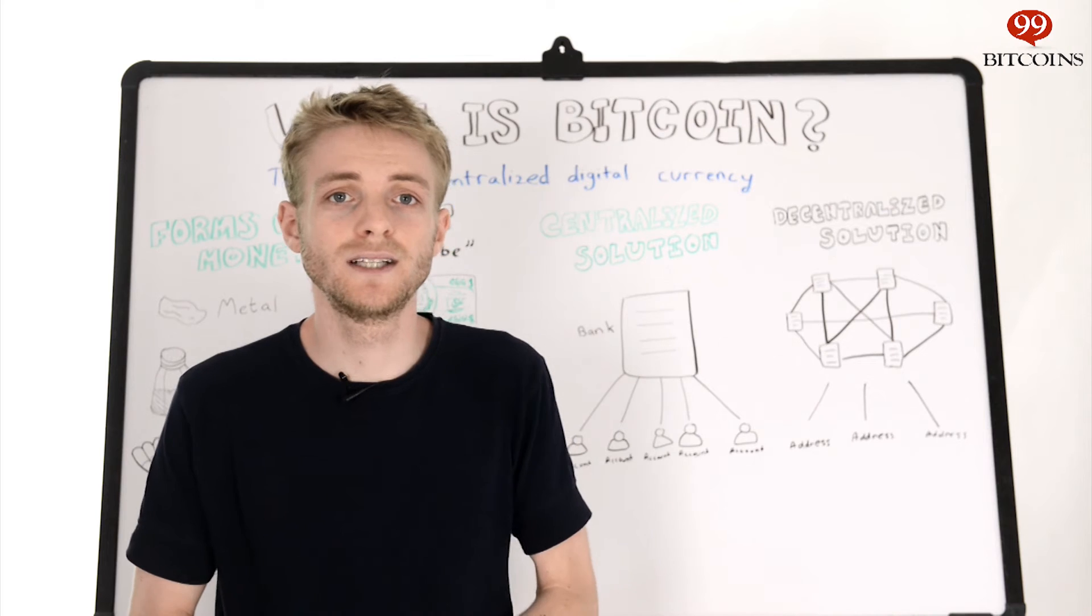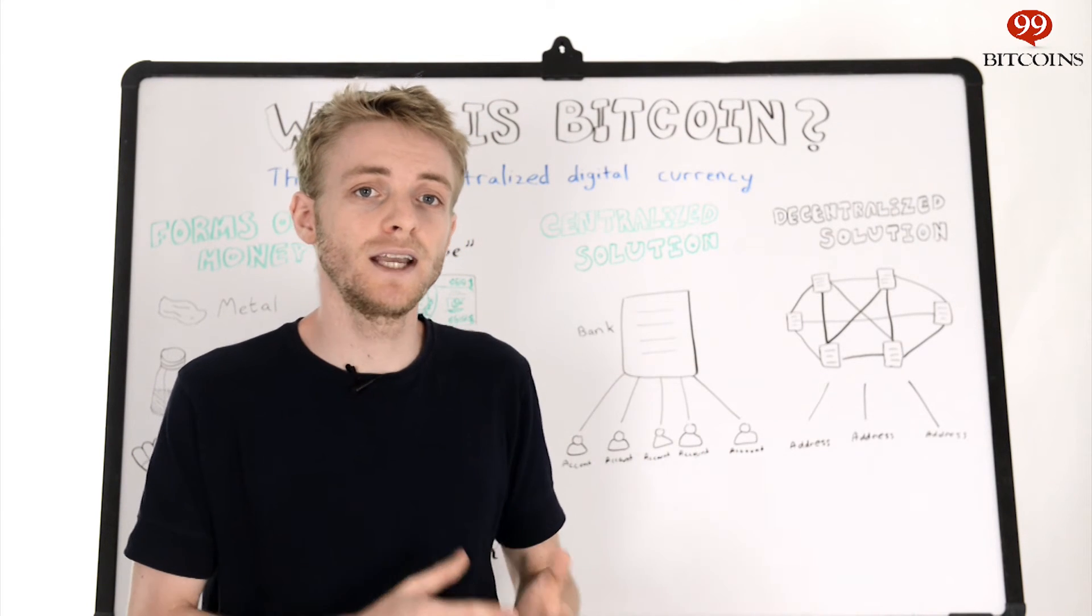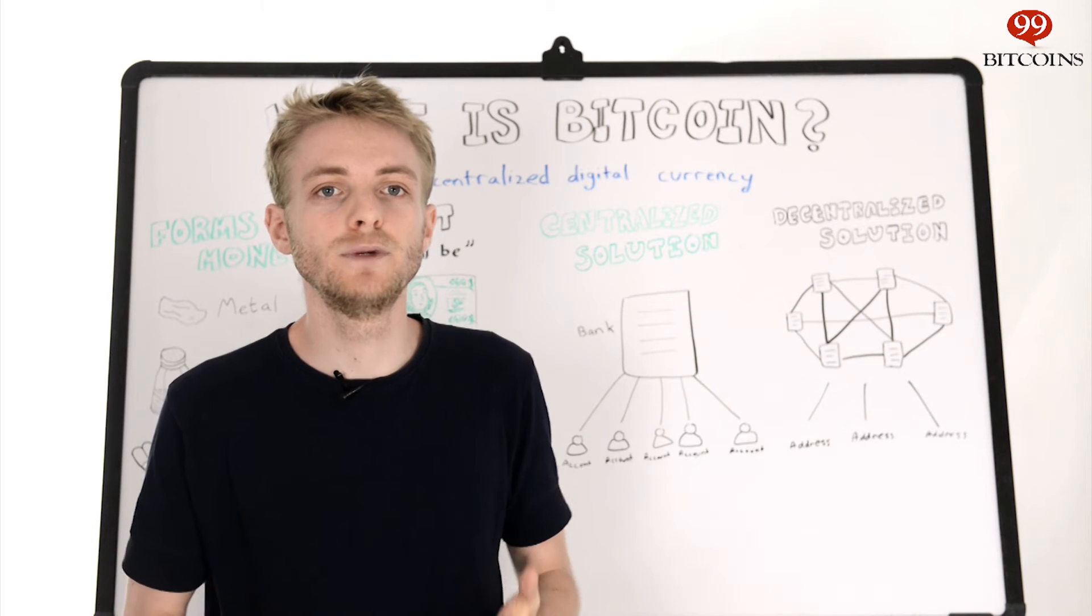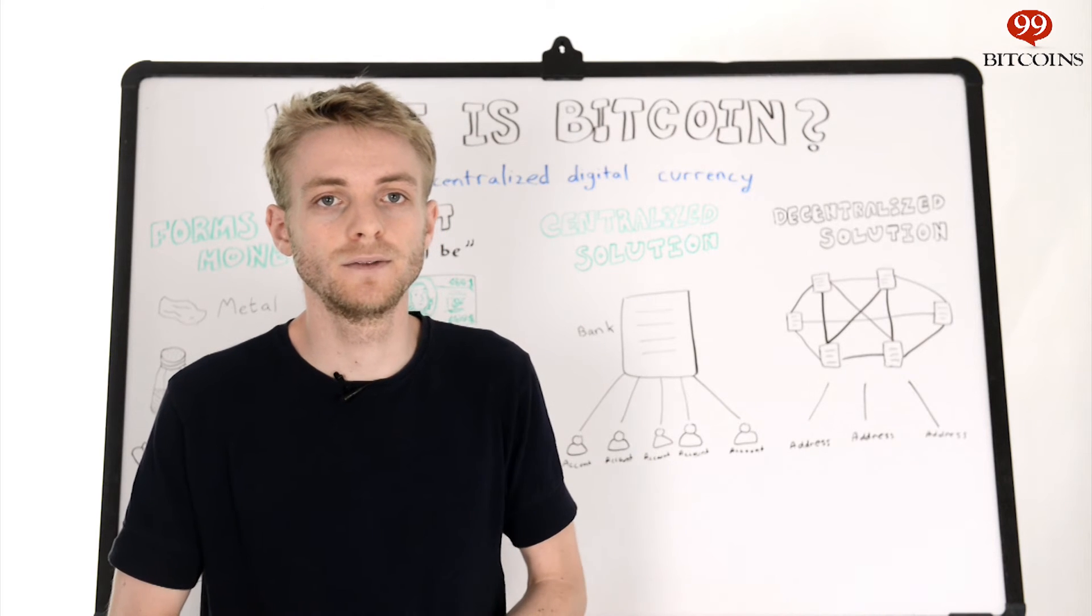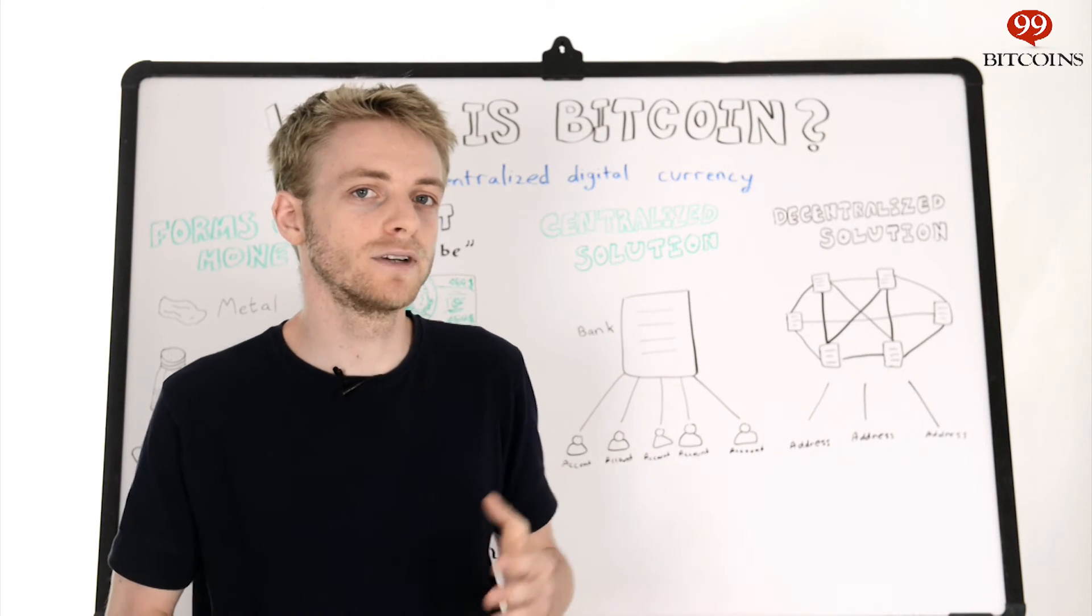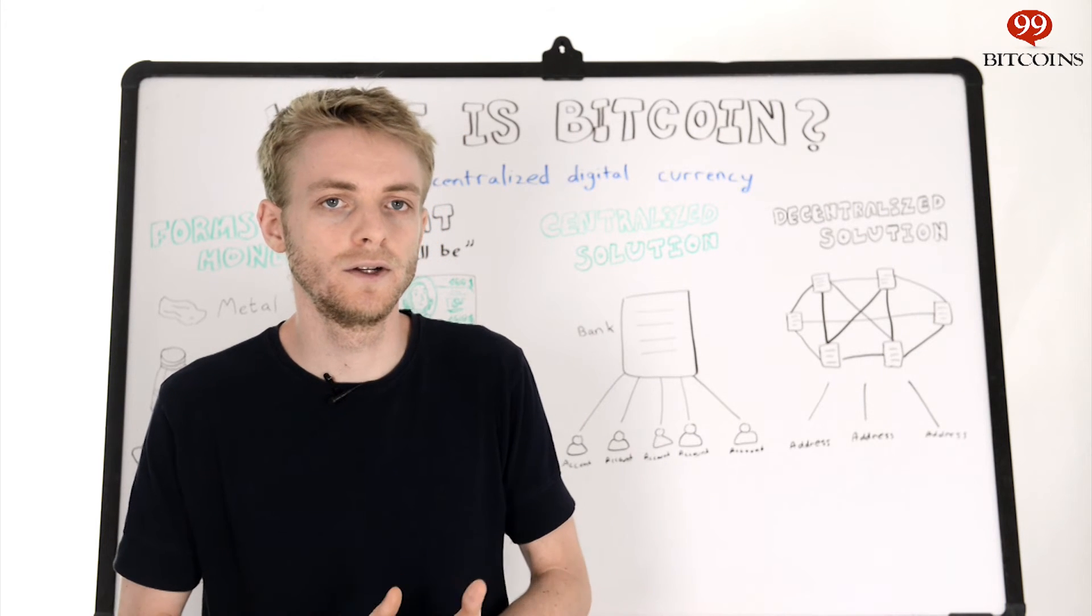The big deal with Bitcoin is that this ledger is public and shared, and it's also maintained by the public. There are thousands of people who have copies of this ledger all around the world, and anyone can download and verify this ledger. And in Bitcoin, instead of accounts, money is moved between addresses, kind of like with email and other internet services.